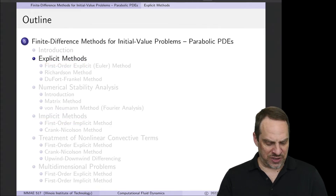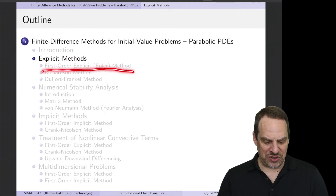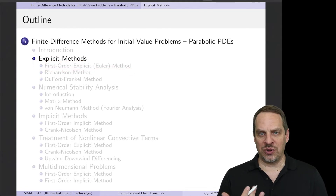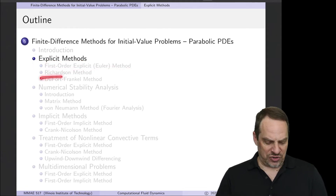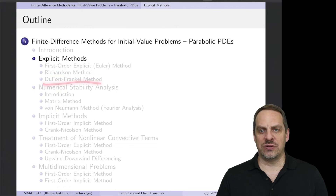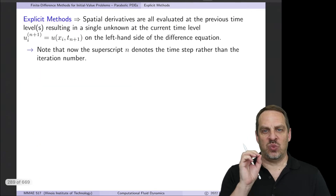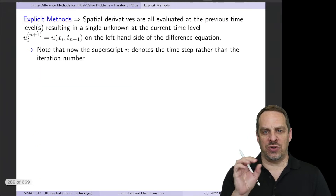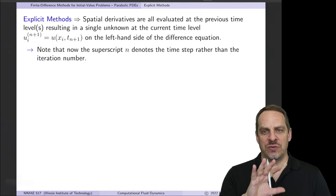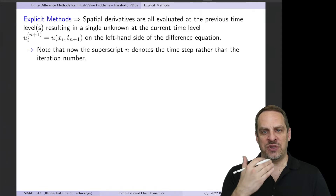In this video, we're going to look at explicit methods — namely the first-order explicit or Euler method, Richardson method, and the Dufort-Frankel method. Explicit methods only have one unknown; all of the other terms in the equation are known, typically from the previous time step.